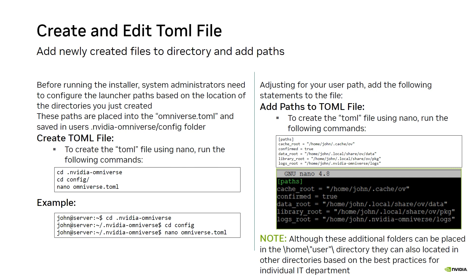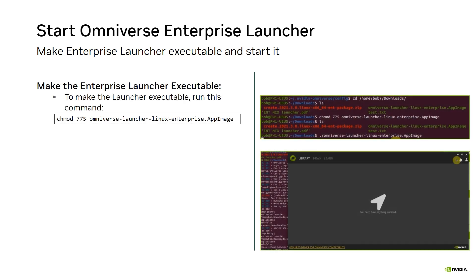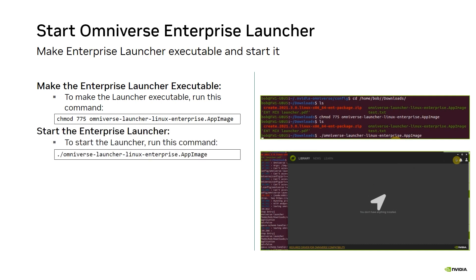Before you can start the Enterprise Launcher, you need to make the file executable using the chmod 775 command shown in the first block. You're now ready to start the Enterprise Launcher by running the command shown in the second block. Keep in mind you will not see the applications yet — adding applications is shown in the next slide. Now that you've successfully deployed the Enterprise Launcher, the next step is to install some applications.